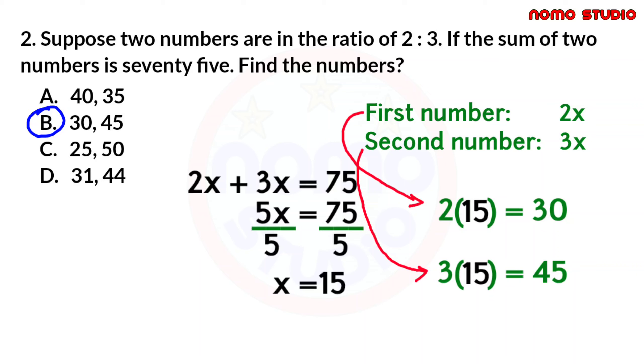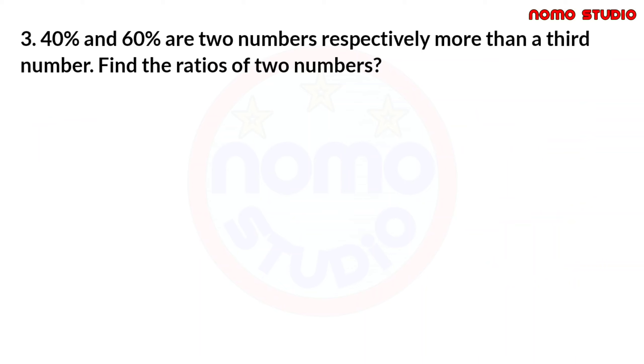Okay, I hope that makes sense. Now, let's proceed with our third problem. 40% and 60% are 2 numbers, respectively, more than a third number. Find the ratios of 2 numbers. Feel free to pause the video and try to answer this problem on your scratch paper.